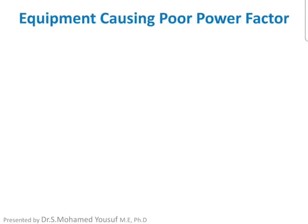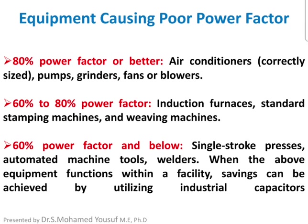Equipment causing poor power factor: air conditioners, pumps, grinders, fans, and blowers typically have 80% power factor or better. Induction furnaces, stamping machines, and welding machines have 60–80% power factor. Single-stroke automated machines and welders have 60% or below. Whenever the power factor goes below 60%, capacitors or capacitor banks should be added to improve the power factor.